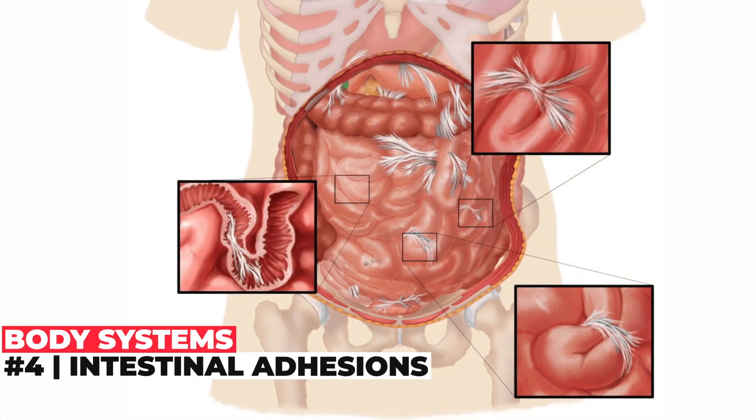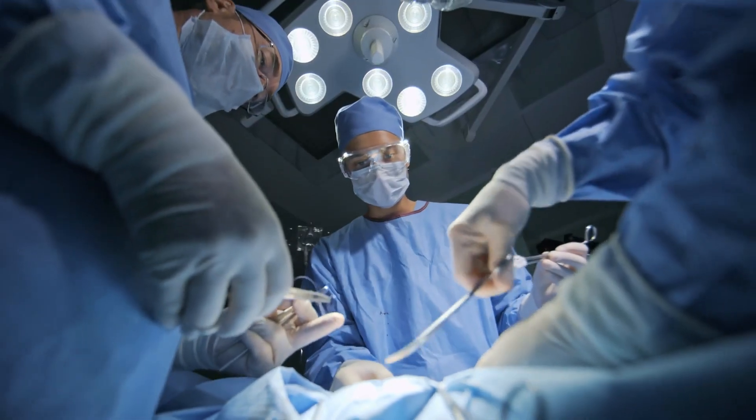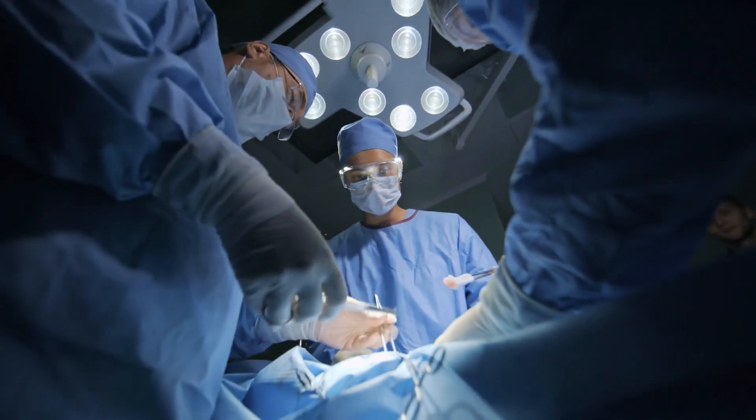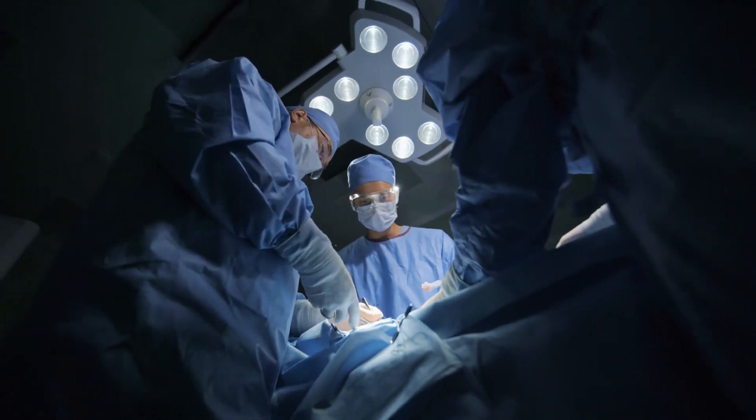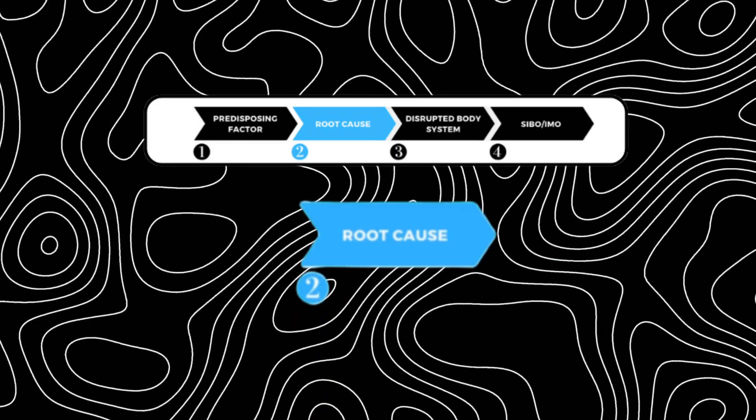The fourth body system that can get disrupted again relates to the small intestine, but this time we're talking about a physical impediment to small intestinal motility. This happens if something like an adhesion — bands of scar tissue that form usually after abdominal surgeries or C-section surgeries — or obstructions, meaning a blockage of some other sort in the small intestine. If one of these four body systems gets disrupted, it's possible that you may end up with SIBO.